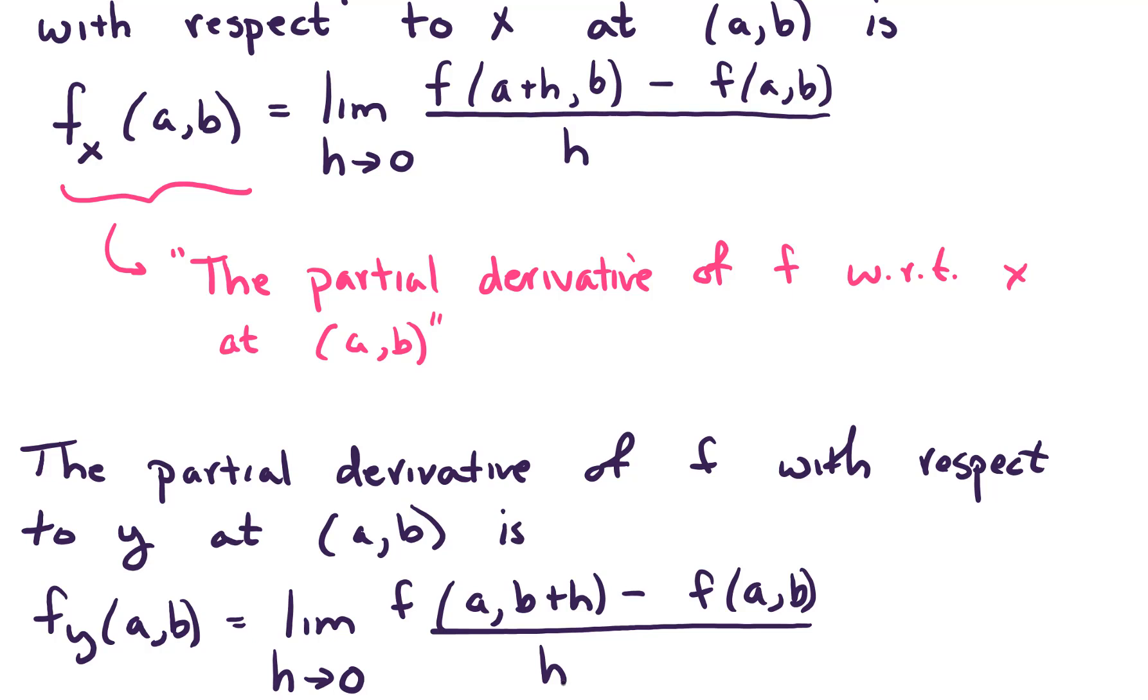And similarly, we've got the partial derivative of f with respect to y at (a,b). And that's given by the limit as h goes to 0 of this difference quotient. In the numerator, we have f of (a, b+h) minus f of (a,b) all over h.